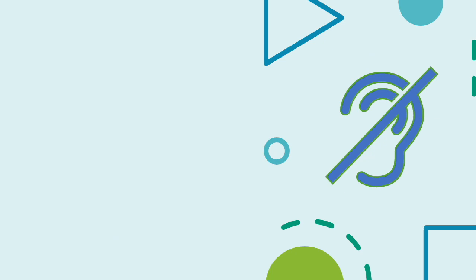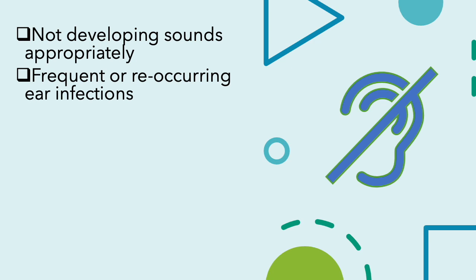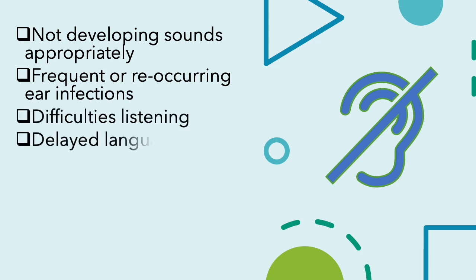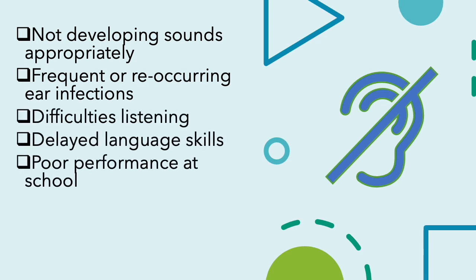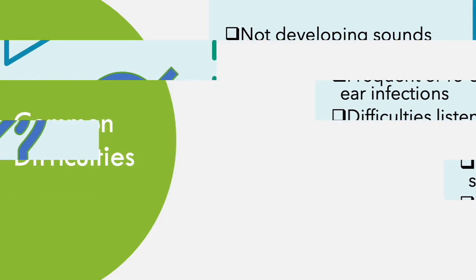A few warning signs to look for regarding hearing impairments include a child not developing sounds appropriately, frequent or recurring ear infections, difficulties listening, delayed language skills, poor performance at school, a child or person may not respond to loud or sudden noises, and poor communication due to middle ear issues.